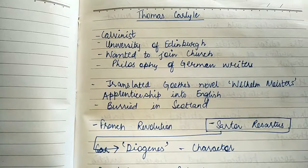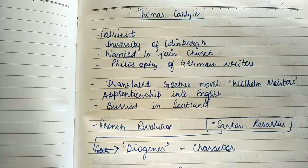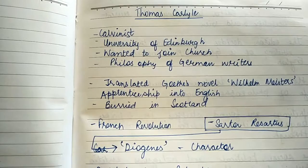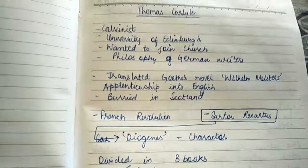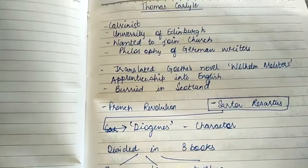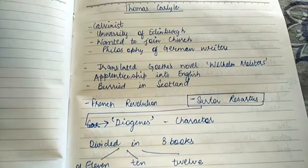He got his education from the University of Edinburgh. As a profession he wanted to join the church but it did not happen. Then he wanted to pursue his career as a mathematician, but finally he became a renowned writer. He had major influence from German writers and used to follow the philosophy of German writers.